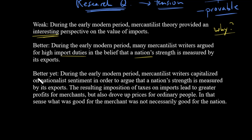The best version creates a lot more tension: 'During the early modern period, mercantilist writers capitalized on nationalist sentiment — people thinking about the good of the nation — in order to argue that a nation's strength is measured by its exports. The resulting imposition of taxes on imports led to greater profits for merchants but also drove up prices for ordinary people. In that sense, what was good for the merchant was not necessarily good for the nation.' It's taken three sentences to unpack this idea, but now we have real tension between what's good for the merchants and what's good for the nation — nationalism versus mercantilism.